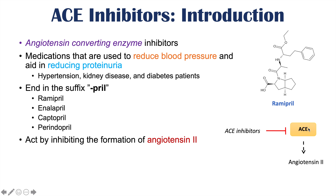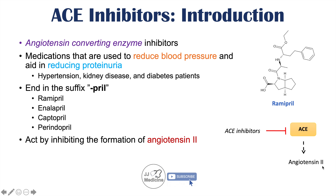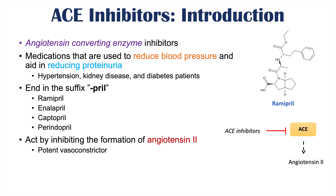The ACE enzyme converts angiotensin-1 into angiotensin-2. It also has other effects, including the breakdown of bradykinin. What's important is that ACE inhibitors prevent the production of angiotensin-2, which is a potent vasoconstrictor — it constricts blood vessels and increases blood pressure.